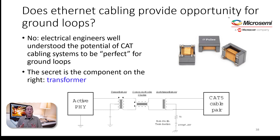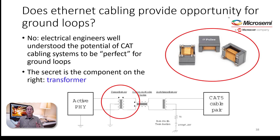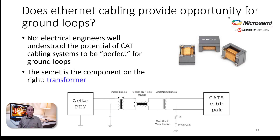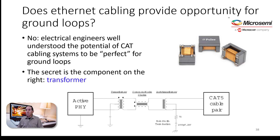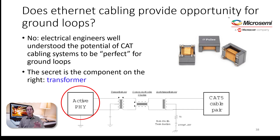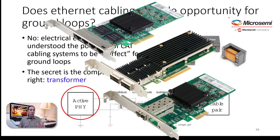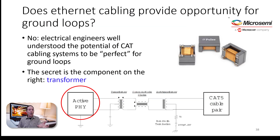Does Ethernet cabling provide an opportunity for ground loops? The answer is no. Electrical engineers well understood the potential of ground loops in an Ethernet system, so what they did was add a component into Ethernet that saved the day. That component is called a transformer.